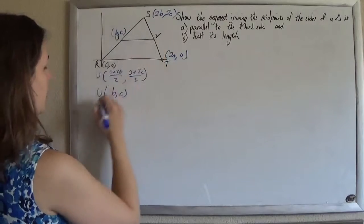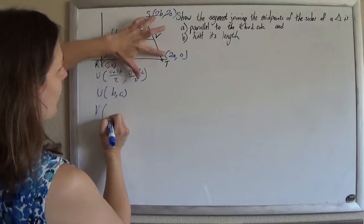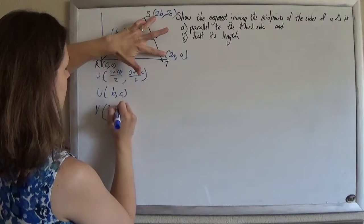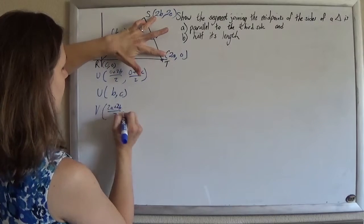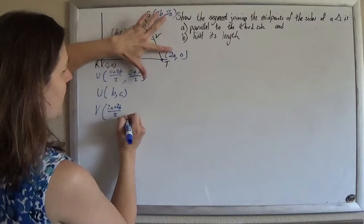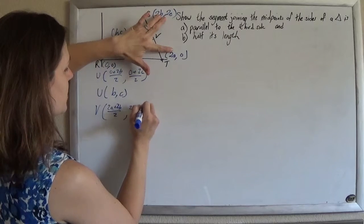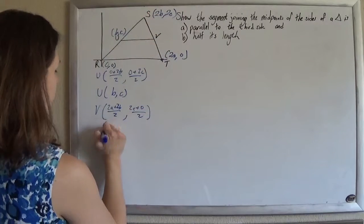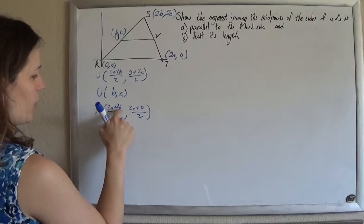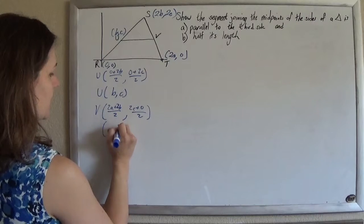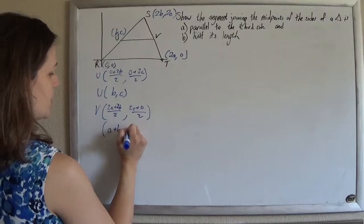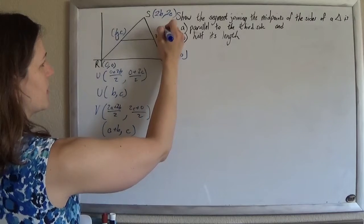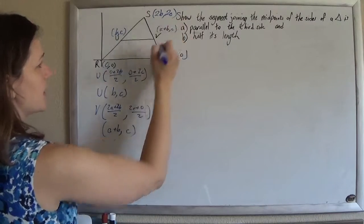And then do the same thing with v. So take the average of the x's, so 2a plus 2b divided by 2. And take the average of the y's, 2c plus 0 divided by 2. And so you just get both of these are divided by 2, so it's a plus b, and then just comma c. So this point here is a plus b, comma c.